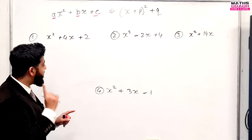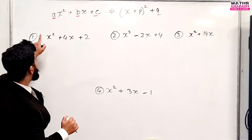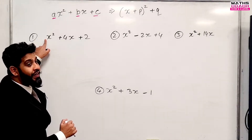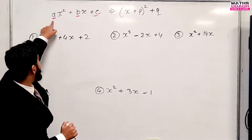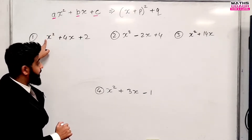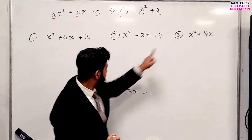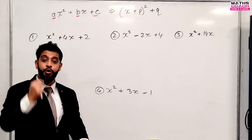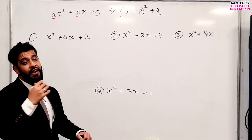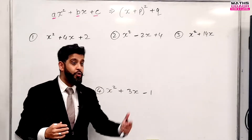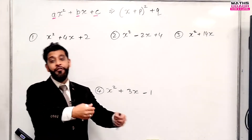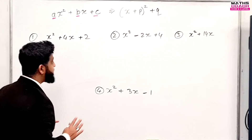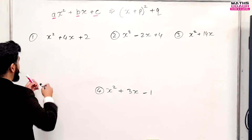Step number one: you have to make sure that there is no number other than one in front of the X squared. So the A value has to be one. You can see on all of them the A value is one. If it is two, three, or whatever — if you have three X squared or five X squared — then we have to factorize that out, and I will show you that later on.